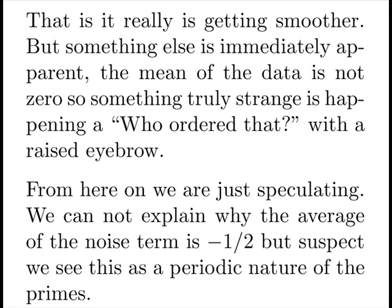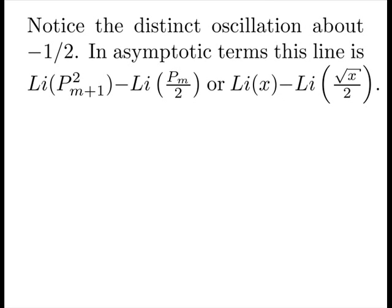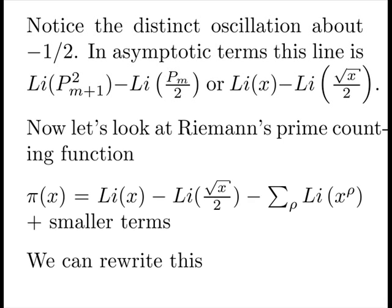But something is immediately apparent. The mean of the data is not zero. So something truly strange is happening. And it's a who ordered that with a raised eyebrow? From here on, we're just speculating. We can't explain why the average of the noise term is minus one-half, but we suspect we'll see this as the periodic nature of the primes. Notice the distinct oscillation, about minus one-half. In asymptotic terms, this is the log integral of our next prime squared subtract the log integral of our current prime by two. Or in old speak, the log integral of x subtract the log integral of root x by two.